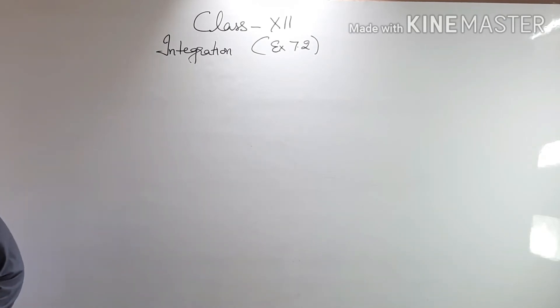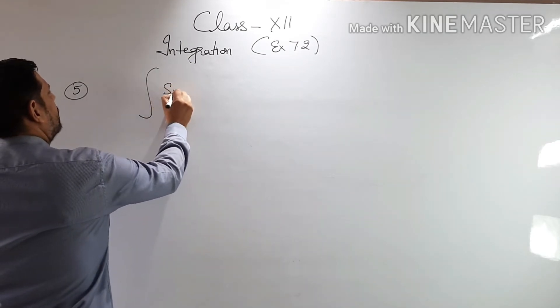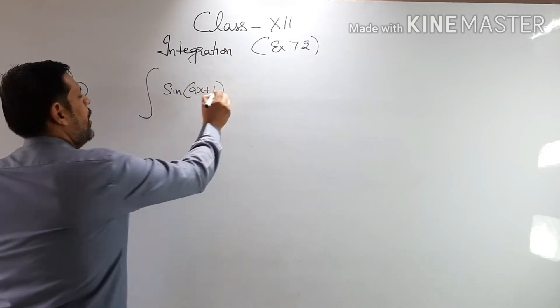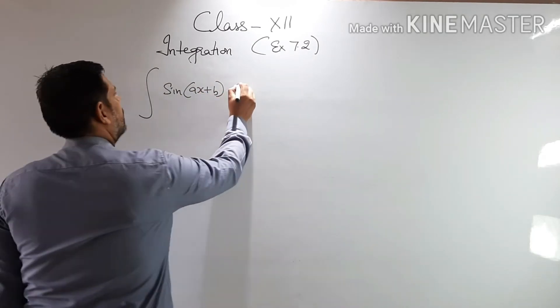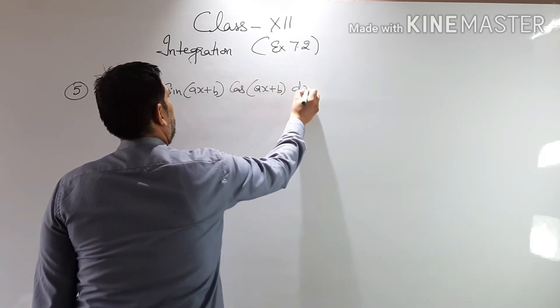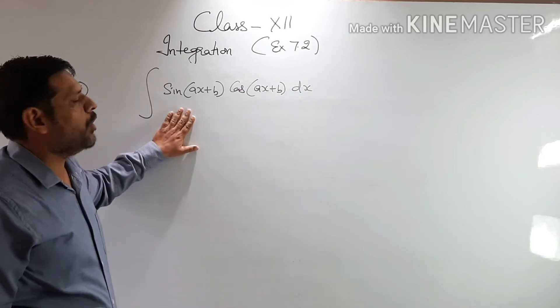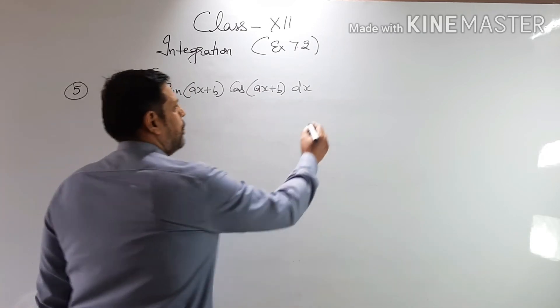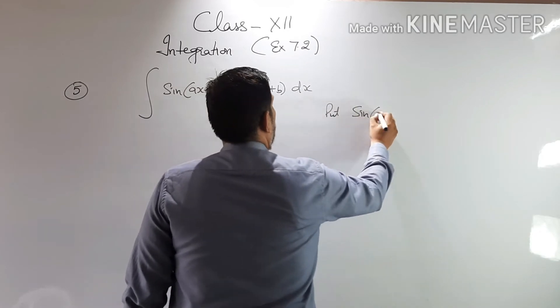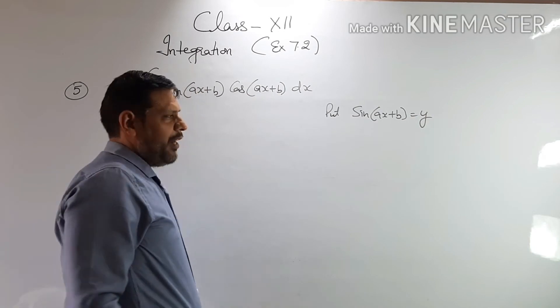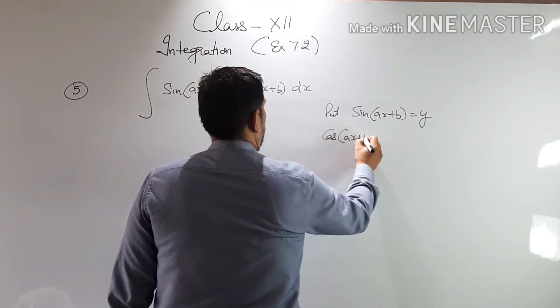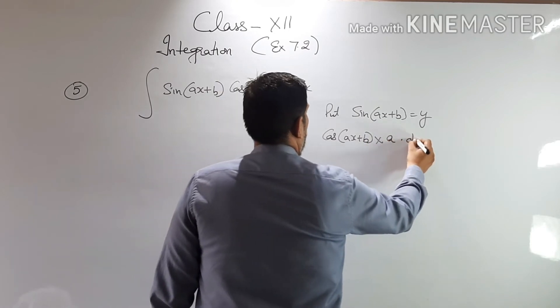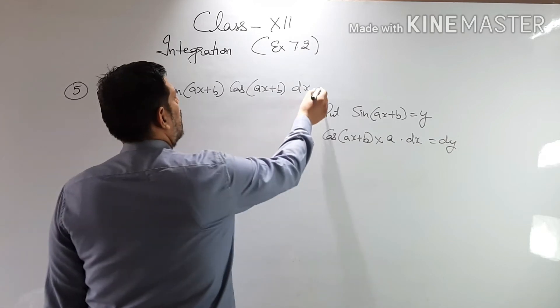Now let's have one more example, question number 5, which says find the integration of sin of ax plus b into cos of ax plus b dx. Now here you have an option. Either you put sin, because sin derivative is cos and cos derivative is sin, it's your wish which you put. So I'm putting here, put sin of ax plus b equals y.